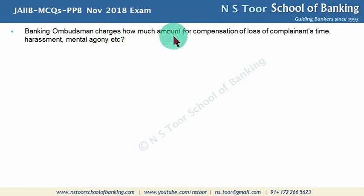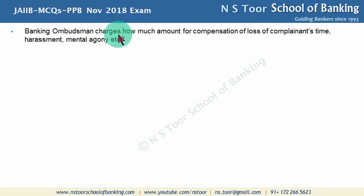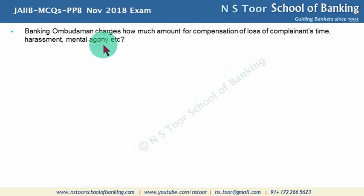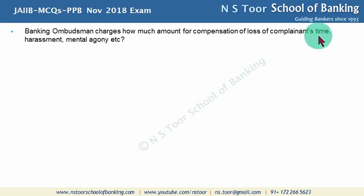The Banking Ombudsman can award compensation to the customer for loss of complainant's time, harassment, and mental agony. The normal compensation amount can go up to Rs. 20 lakh, but for this specific purpose — mental harassment, mental agony, and time and effort spent — the amount is restricted to Rs. 1 lakh, and this is additional compensation.